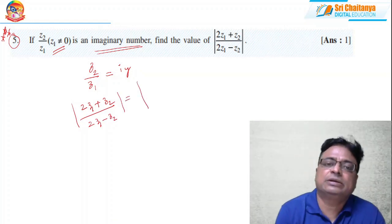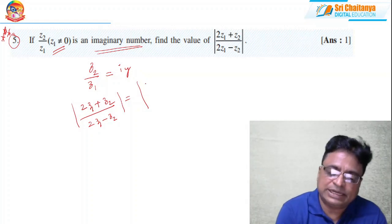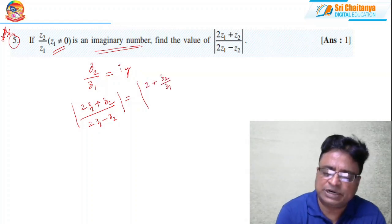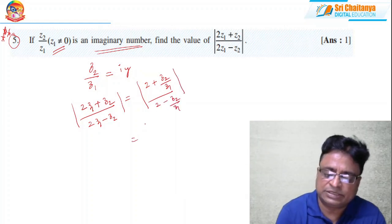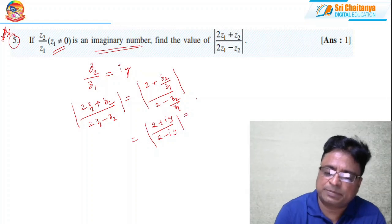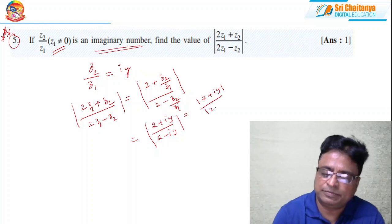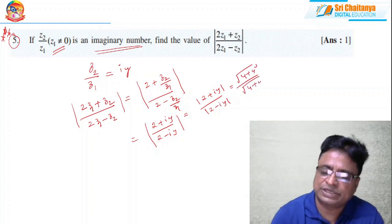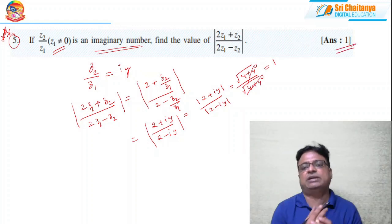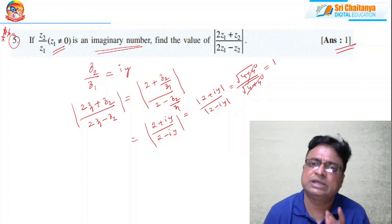The technique is to divide both numerator and denominator by z1. This gives modulus of (2 + z2/z1) by (2 - z2/z1), which is modulus of (2 + iy) by (2 - iy). By the property that |z1/z2| = |z1|/|z2|, this becomes √(4 + y²) divided by √(4 + y²), which equals 1. Getting the answer is not the only goal — practice the technique involved.